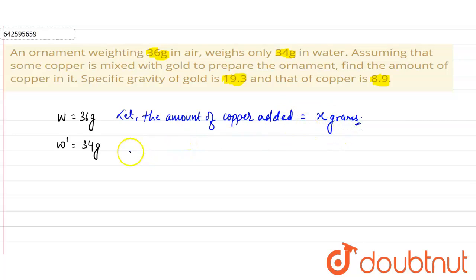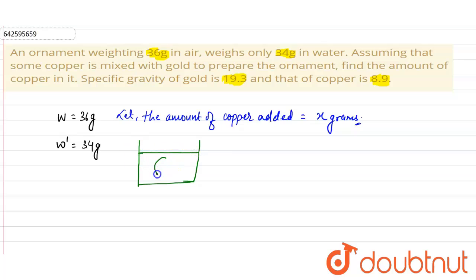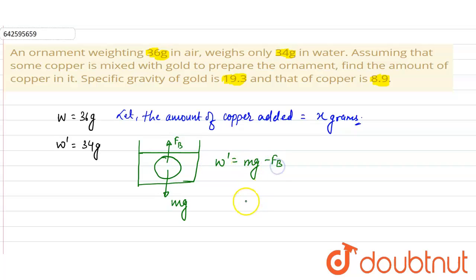The weight in air is 36g and weight in water is 34g. When the ornament is dipped into water, it experiences a downward force mg and an upward buoyant force Fb. So the weight W-dash in water equals mg minus the buoyant force Fb. This is equation number one.